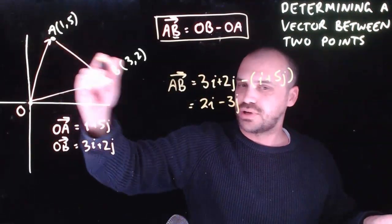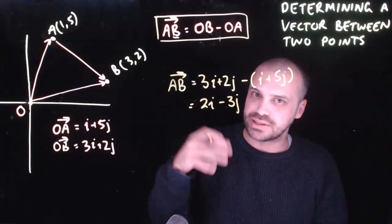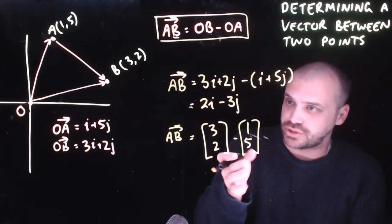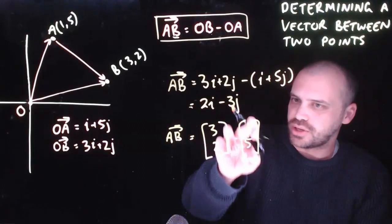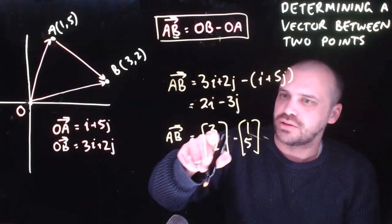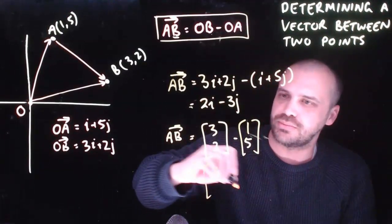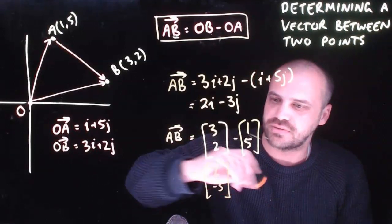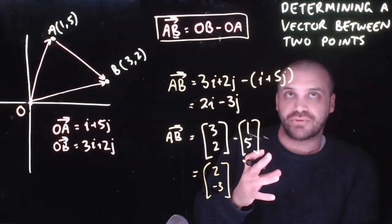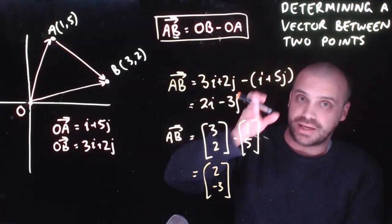That gives us 2 across and 3 down — a straightforward example, but you'll see more difficult ones later on. Using column vectors makes this really clean: take the second point minus the first point. So 3 minus 1 is 2, and 2 minus 5 is negative 3. And so we know vector AB — if you want to find a vector between two points, this formula gets it done.